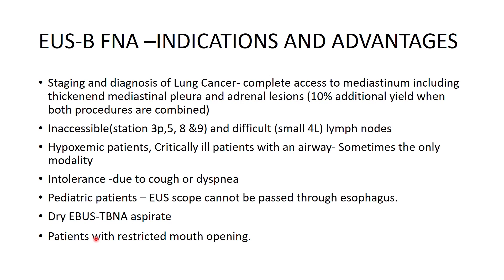Coming to the indications and advantages: EUS-B FNA is used in staging and diagnosis of lung cancer and provides complete access to the mediastinum, including thickened mediastinal pleura and sometimes the adrenal lesions — mostly the left adrenal. The yield on average has shown to be 10% higher when the procedure is combined. We can access all inaccessible stations not assessed by EBUS-TBNA alone: stations 3P, 5, 8, and 9, and sometimes difficult lymph nodes like small station 4L.